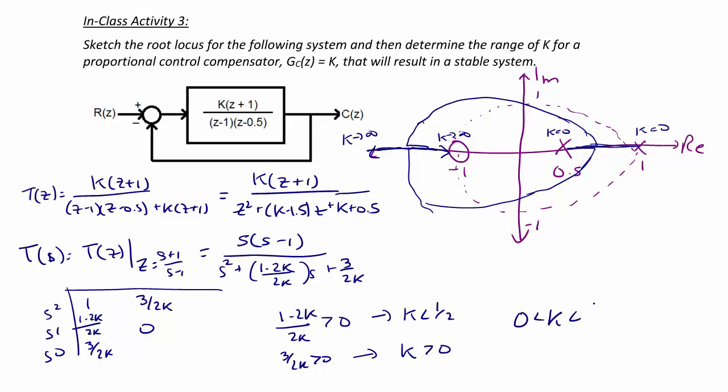So for stability, k must be between 0 and 1.5. So that means that the point where this crosses back over the unit circle right around here must be k is equal to 1.5.